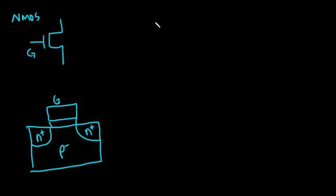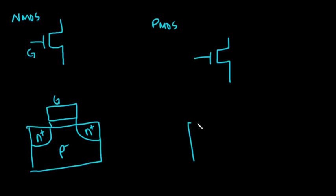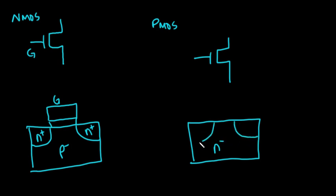For the PMOS transistor, it's complementary to the NMOS device — that's why it's called complementary MOS or CMOS. Here's our generic symbol for the MOS device and let's draw the PMOS cross section. For the PMOS device, this lives in an N minus well or N minus body, so with lightly doped N material, and it has P plus source and drain regions — heavily doped P material. Here's our thin silicon dioxide dielectric and our thick polysilicon gate.